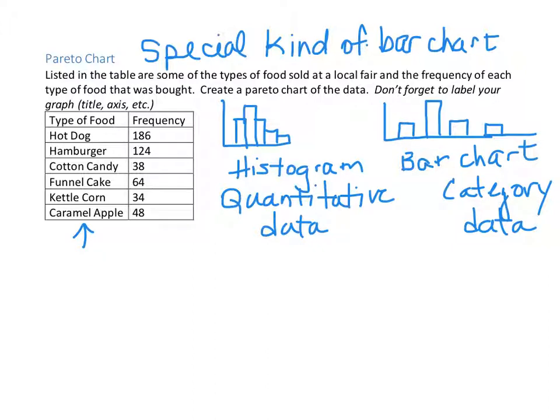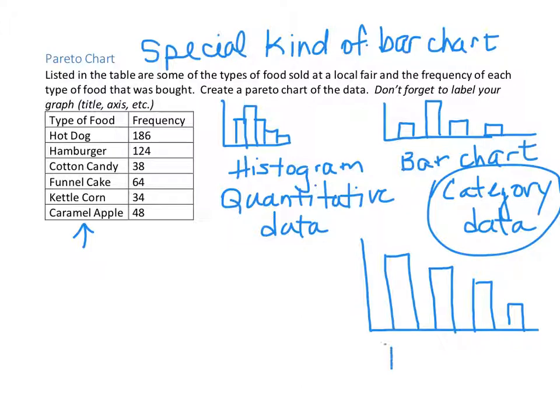Now, the difference in a Pareto chart and a bar chart, before I actually make this one, is that a Pareto chart has the categories ranked in order of decreasing frequency. So the tallest bar represents the most frequent category, and they're put in descending order. But again, these are category data. So this is the Pareto. And this is the bar chart.